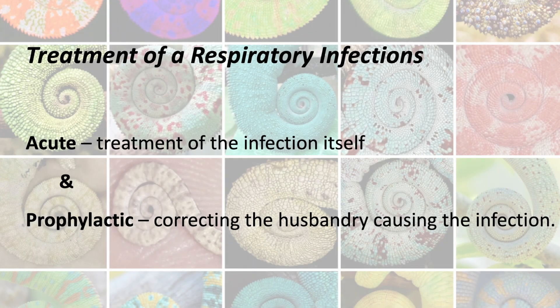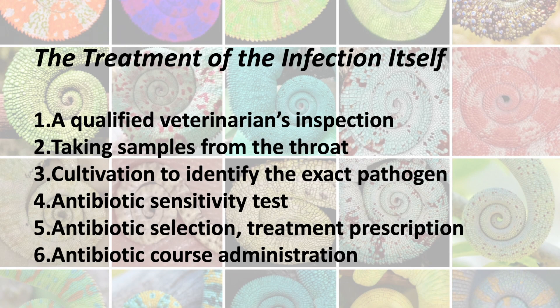Once we find out that a chameleon is suffering from a respiratory infection, we need to fix it. This happens at two levels. The first level is the acute treatment — treating the infection itself. We also need to act prophylactically so that the reasons for the disease disappear and, once the animal is healed, it is not exposed to the same factors that caused the disease. Respiratory infection is deadly and very serious, so we need to take it seriously and treat it.